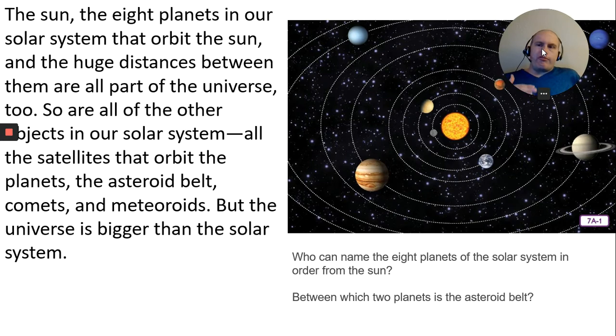The sun, the planets in our solar system that orbit the sun, the huge distance between them are all parts of the universe, too. So are all the other objects in our solar system. All the satellites that orbit the planets, the asteroid belts, comets, meteoroids. The universe is bigger than our solar system.